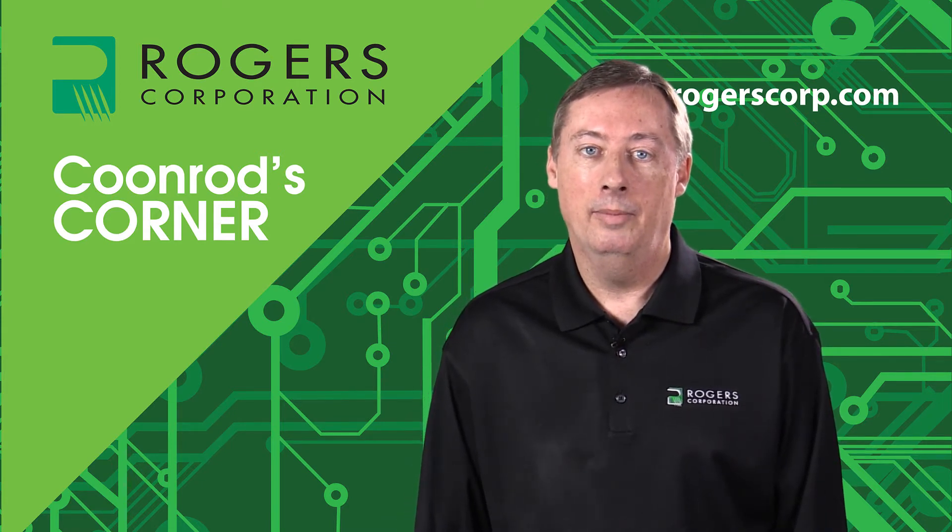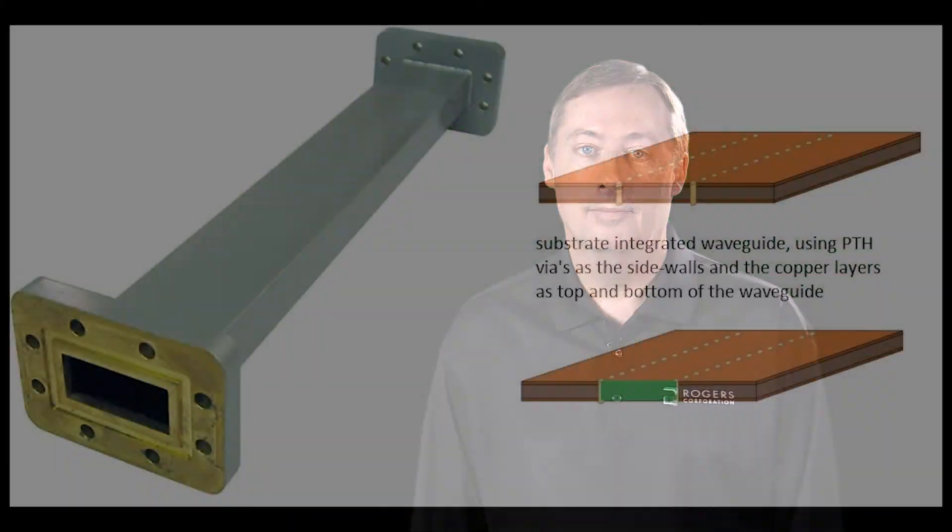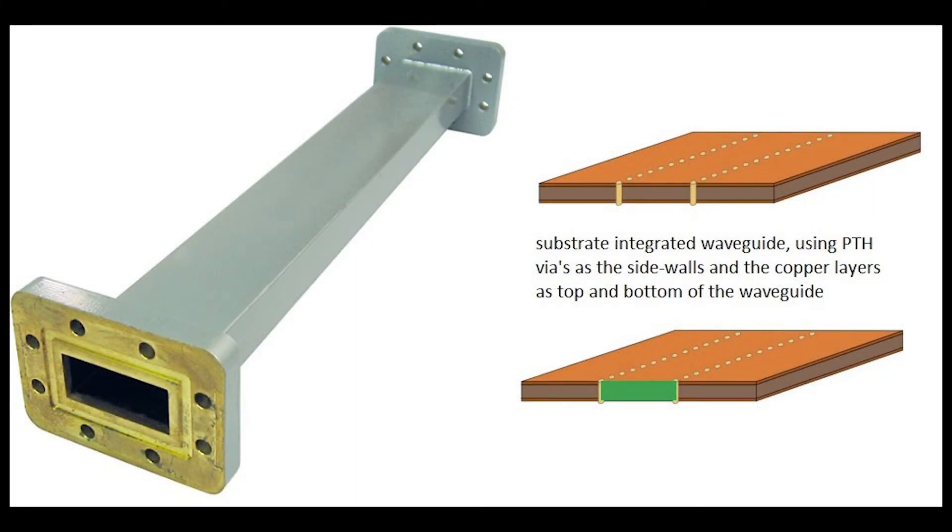Let's go ahead and show a little bit of detail about SIW. The picture shown here on the left is a traditional rectangular waveguide, basically a metal tube that will allow electromagnetic wave to propagate through that tube.